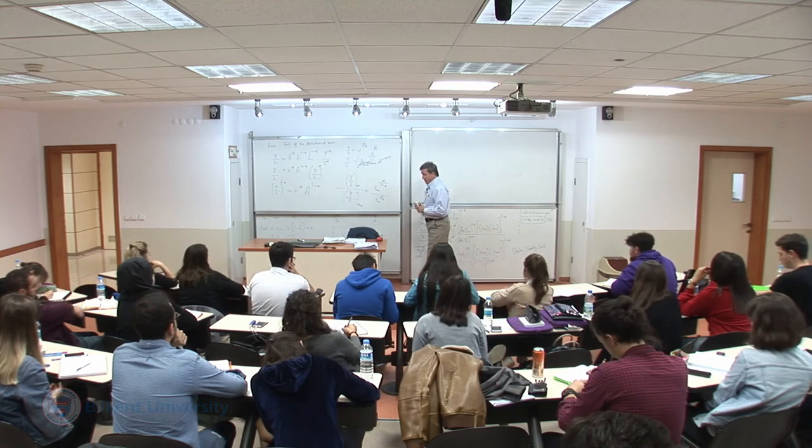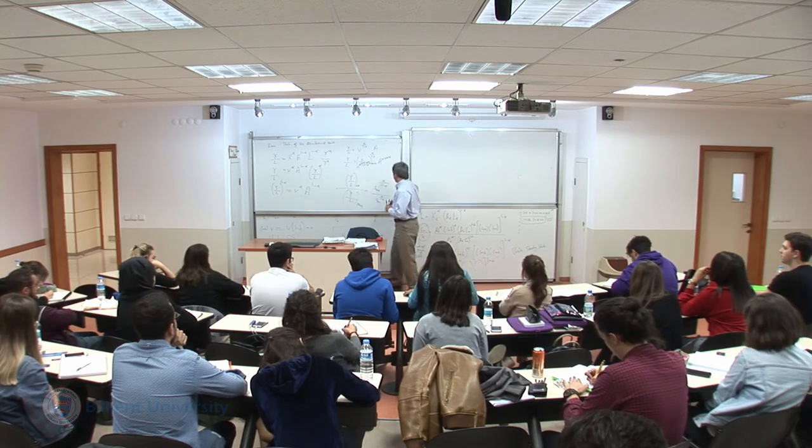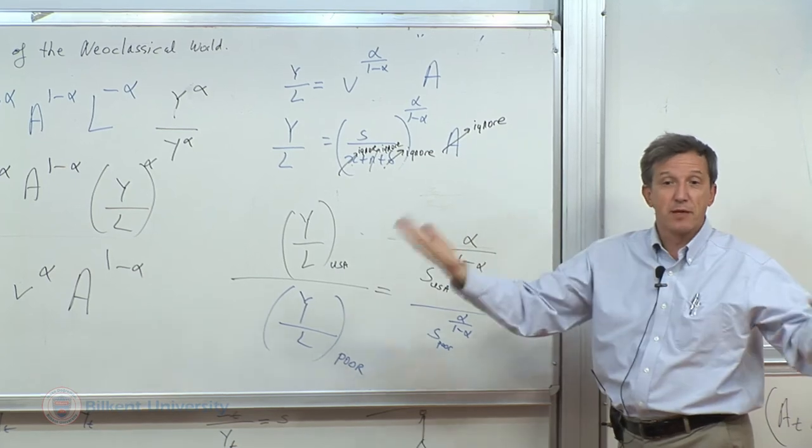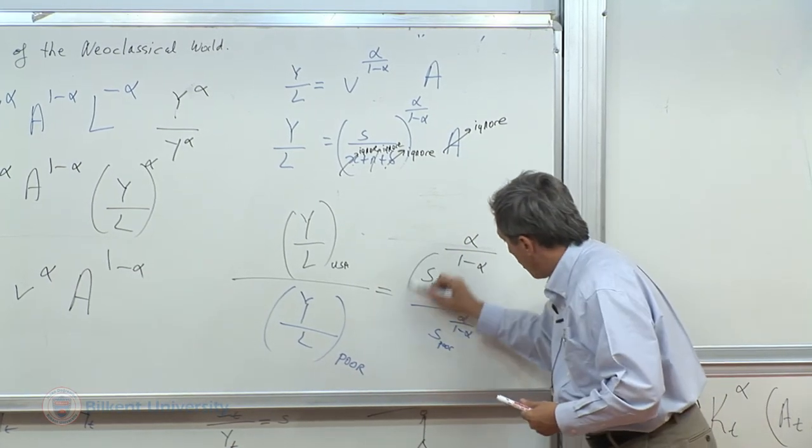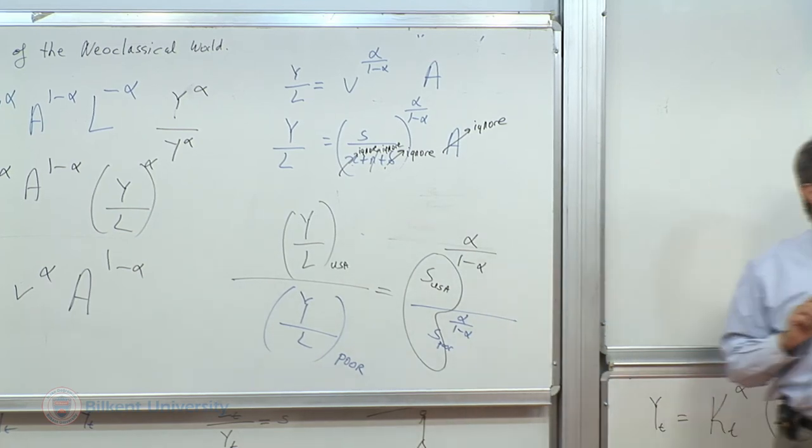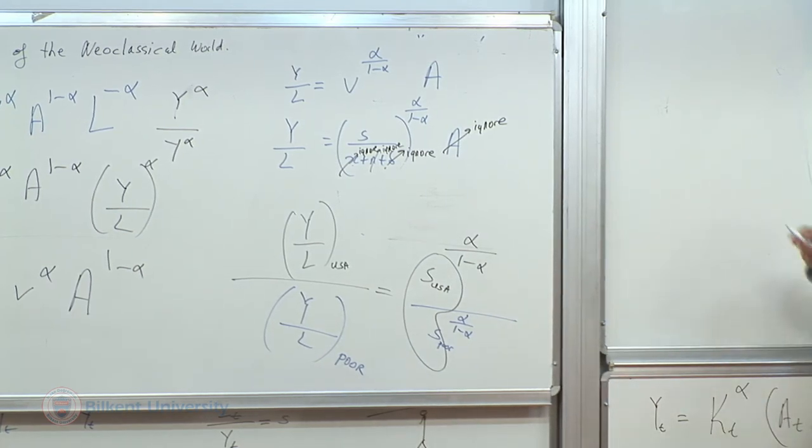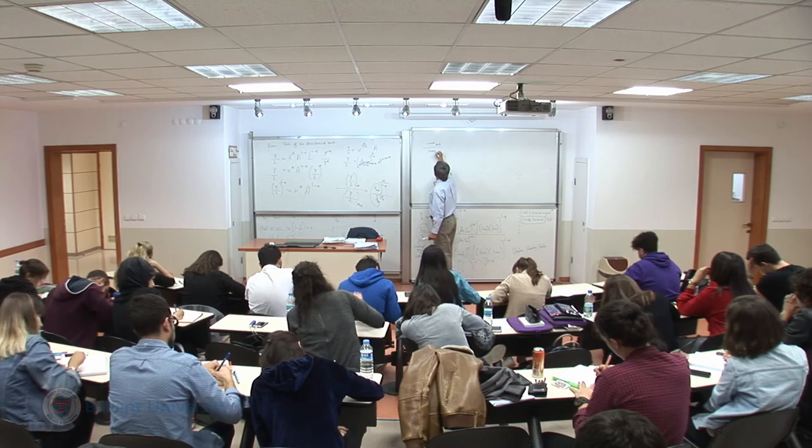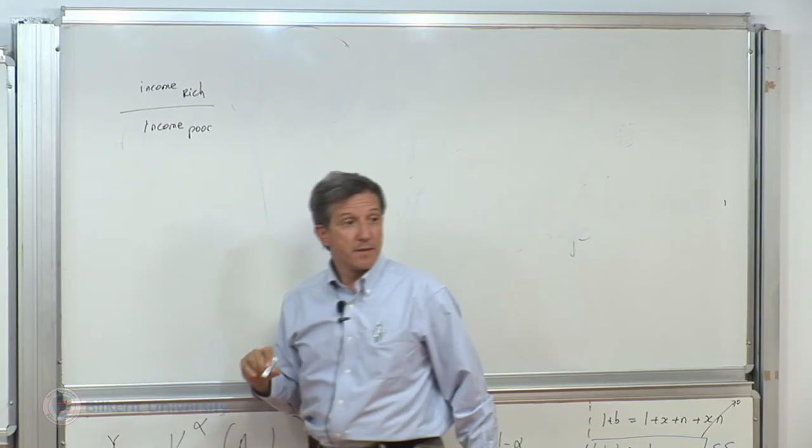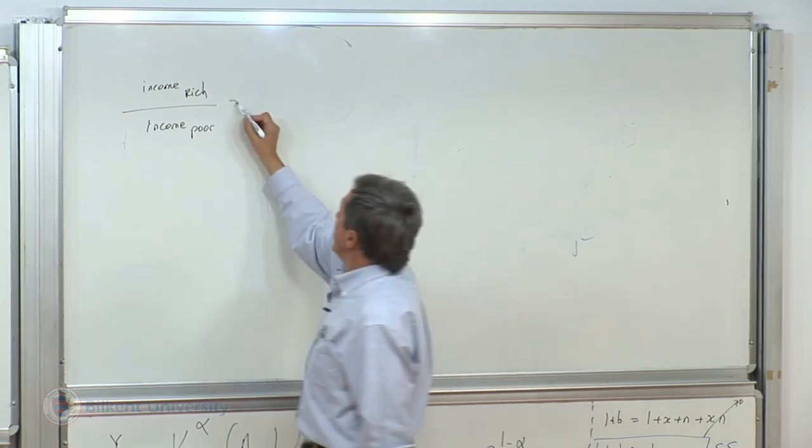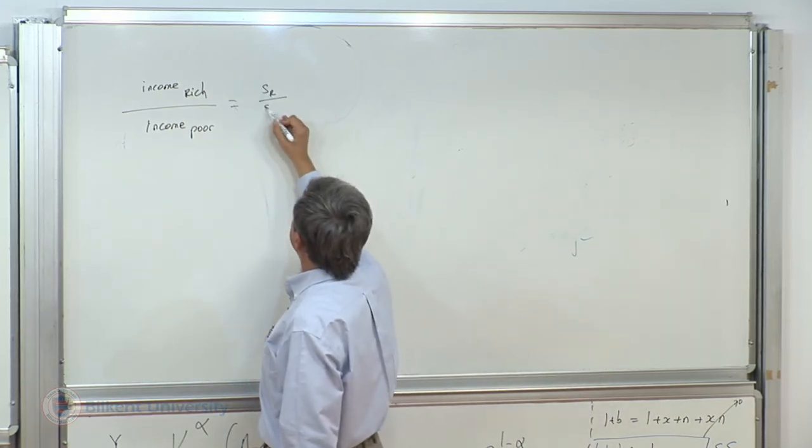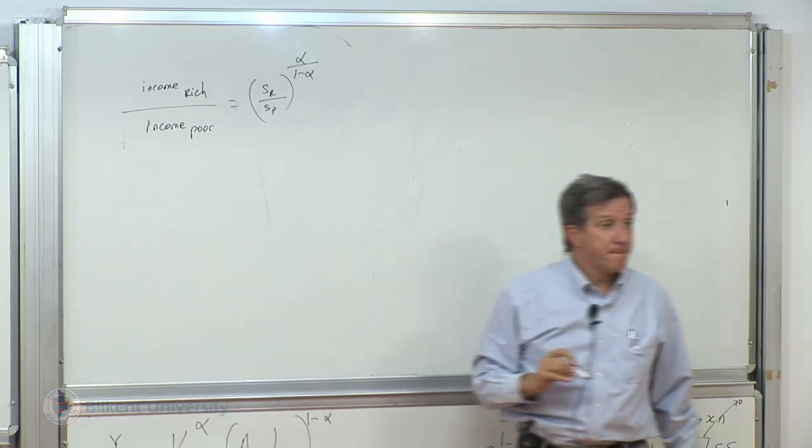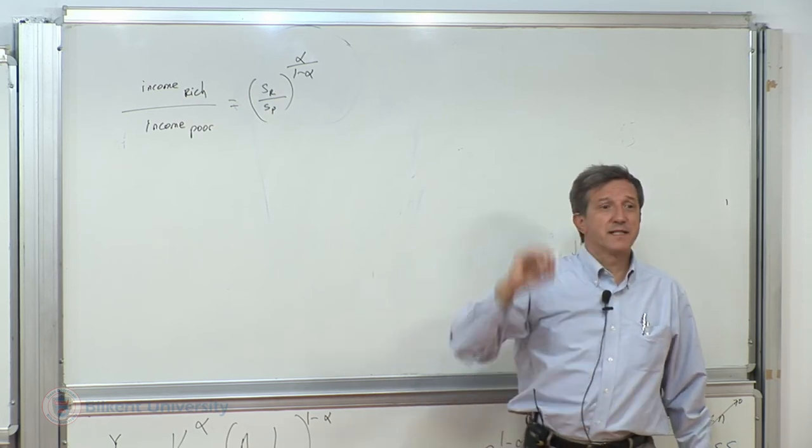Or simply, since again technology is the same, alpha and 1 minus alpha are technological parameters. It's out there. Public knowledge. I am just keeping this. So the whole thing depends on saving rate differences. So income of rich to income of poor per capita income, right? Is a factor of saving rich, saving poor, to alpha over 1 minus alpha. That's the bottom line.